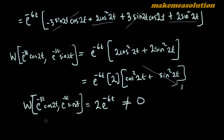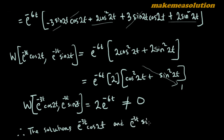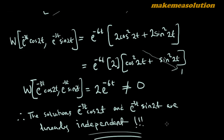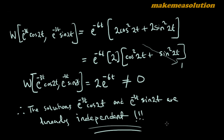The Wronskian is 2e^(-6t), which is not equal to zero. Since it is not equal to zero, we can conclude that the solutions y₁ = e^(-3t)cos(2t) and y₂ = e^(-3t)sin(2t) are linearly independent. That is about this problem. We are going to wrap it up here for problems dealing with the Wronskian.